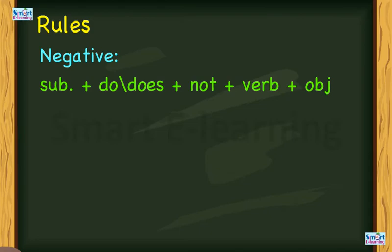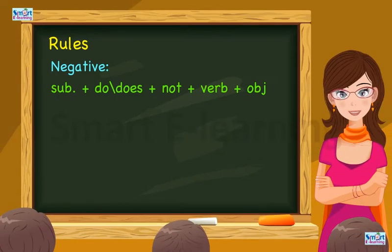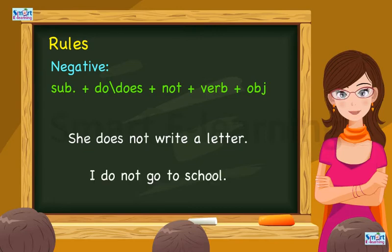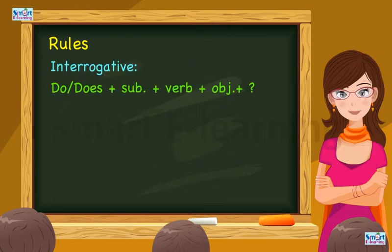Negative: subject plus do or does plus not plus verb plus object. She does not write a letter. I do not go to school.